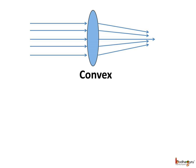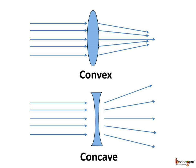When the parallel rays of light coming from an object pass through a lens, they don't remain parallel anymore. When the parallel rays pass through a convex lens, they converge and finally meet at a point. On the other hand, when the parallel rays of light pass through a concave lens, they move away from each other — that is, they diverge.